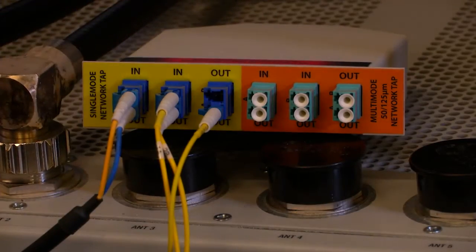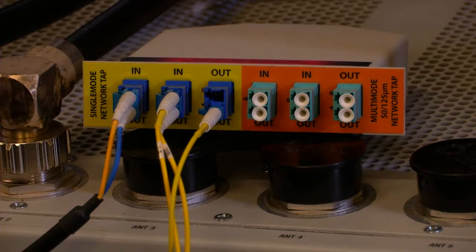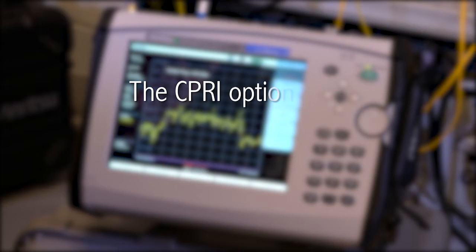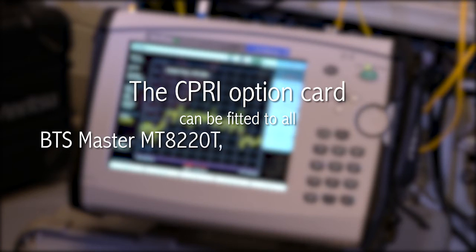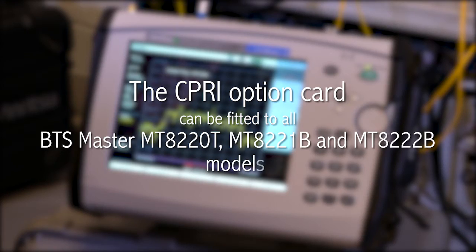Measurements of both the uplink and the downlink are possible. The CPRI option card can be fitted to all BTS Master MT8220T, MT8221B, and MT8222B models.